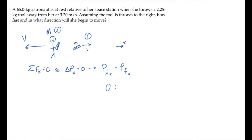In the initial state, nothing's moving, so there's no momentum. In the final state, the tool is moving to the right in the positive direction, so its momentum is mass times velocity. Little m times little v is positive.